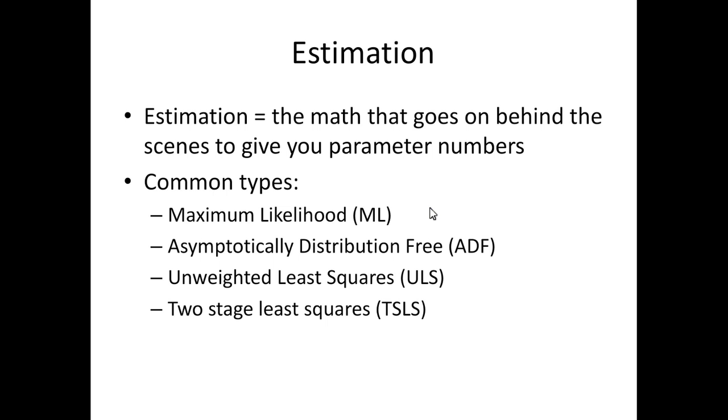So there are a couple of common types. We're mostly going to use maximum likelihood, but there's also asymptotically distribution-free, unweighted least squares, two-stage least squares, and then Lavaan, the program we're going to use, our package we're going to use with R, has a bunch of other types of options, mostly in the least squares family.